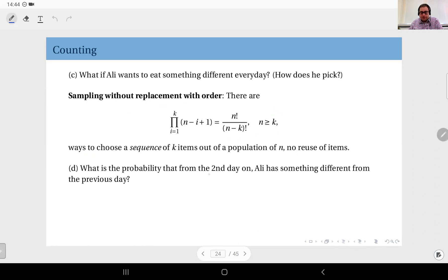What is the probability that from the second day on, Ali has something different from the previous day? Now this is a different scenario. On day number one, again he has 10 choices. On day number two, of course he doesn't want to repeat the previous day, so he has now nine choices.